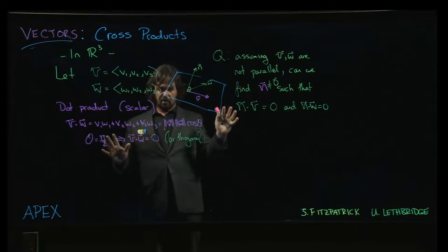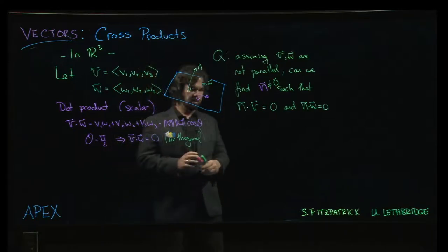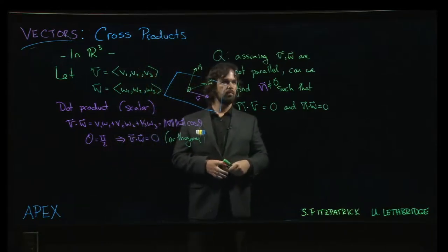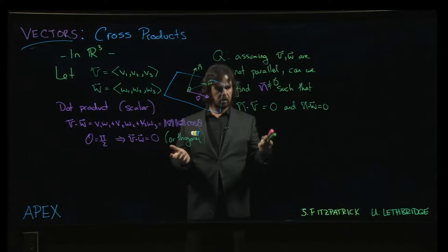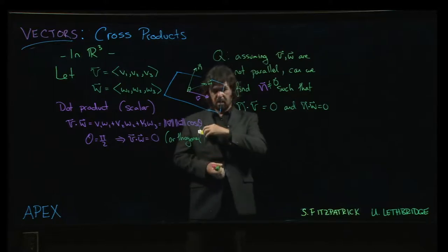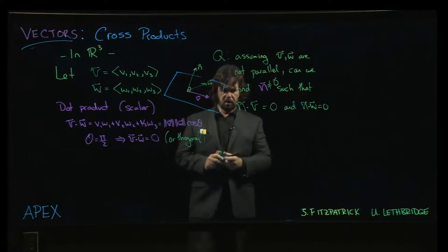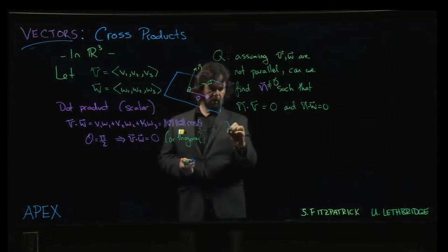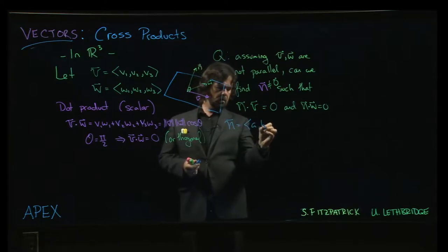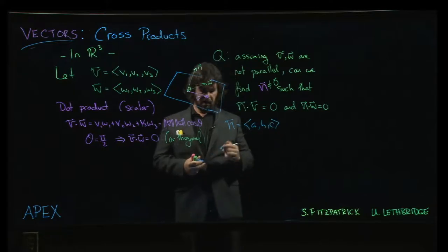Now, once you realize that this is an important thing to be able to do, the next question is, how do you come up with this vector? How do you find it? You can play around a little bit and you can say, if n is equal to a, b, c...